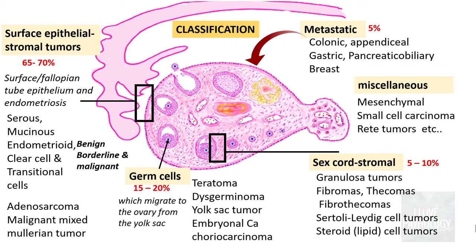Ovarian tumours are classified into surface epithelial stromal tumours, germ cell tumours, sex cord stromal tumours, metastatic tumours, and miscellaneous tumours. I have so far covered surface epithelial tumours and part of germ cell tumours. In this part we will be discussing about teratomas in detail.